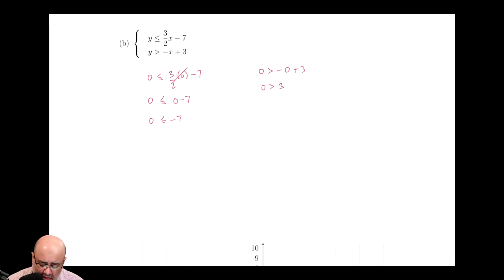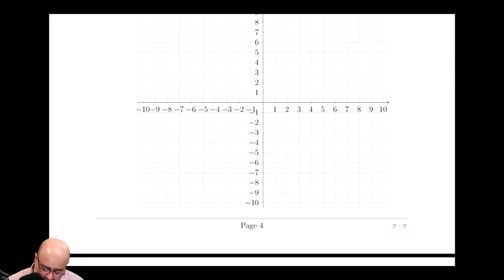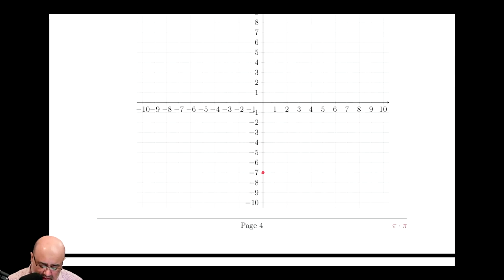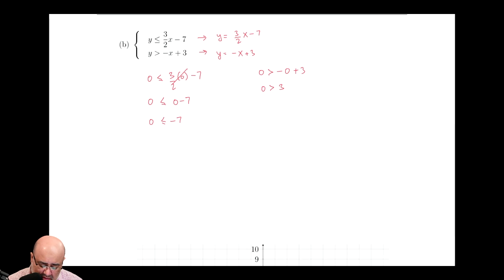For the next one, these two are again in slope-intercept form already. So we can rewrite them as y equals 3 over 2x minus 7 and y equals negative x plus 3. So I can just use slope-intercept, slope and the y-intercept to graph these.